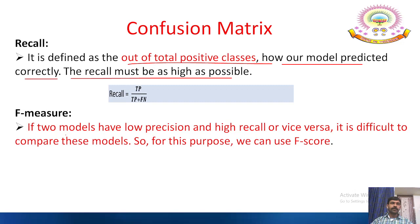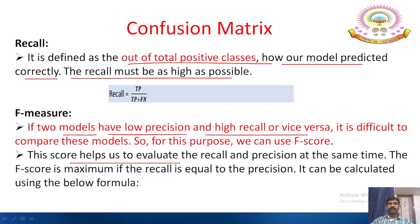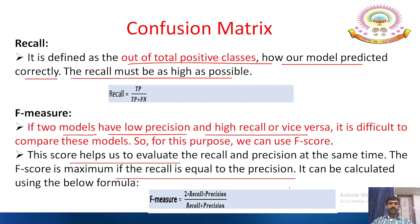F-measure: if two models have low precision and high recall, or vice versa, it is difficult to compare them. For this purpose we use the F score, which helps evaluate recall and precision at the same time. The F score is maximum when recall equals precision. The formula is: F-measure = 2 * (Recall * Precision) / (Recall + Precision).